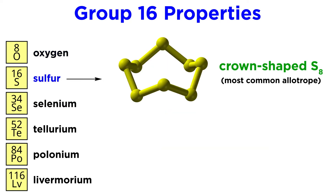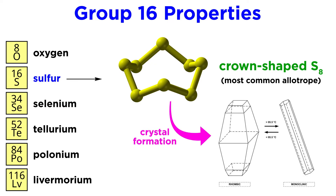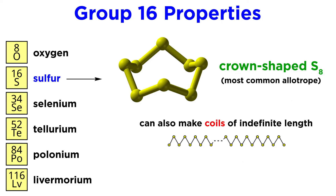Sulfur also has several allotropes, the most common of which is the crown-shaped S8. This can take on rhombic or monoclinic arrangements. Sulfur can also form highly viscous coils of indefinite length, which take on plastic-like properties. And when sulfur boils, it produces varying amounts of S8, S6, S4, and S2.